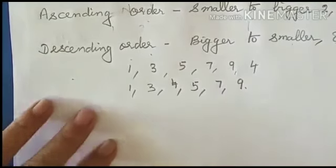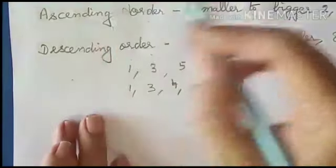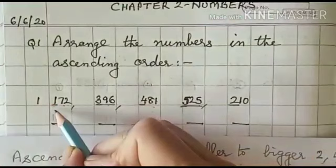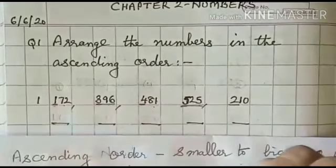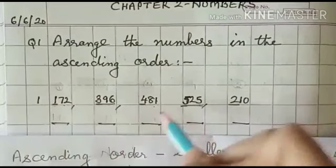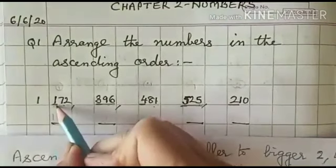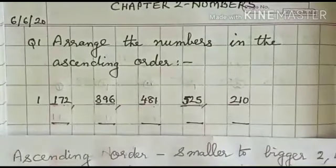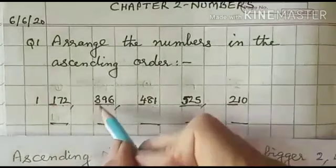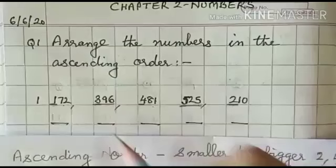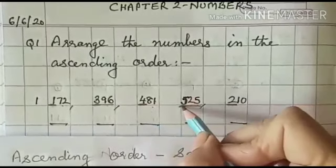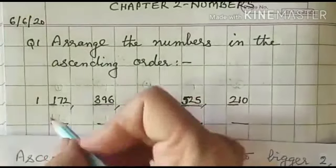In the same way, you can see in these numbers, the first thing to look at is the hundreds place. Which is the smallest number at the hundreds place? Here it is 1 in this number, then 2 in this number, then 3 in this number, then 4, and then 5. So which number will come first?